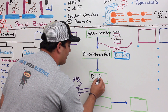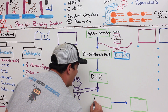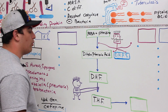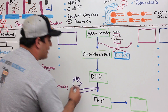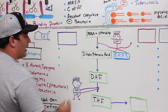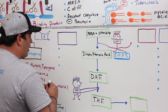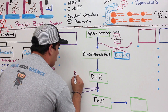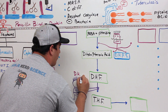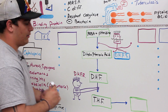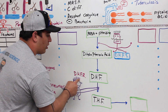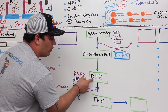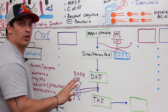Then that dihydrofolic acid is converted into tetrahydrofolate, or tetrahydrofolic acid. That reaction is catalyzed by this enzyme, which is called dihydrofolate reductase. So dihydrofolate reductase catalyzes the conversion of dihydrofolic acid into tetrahydrofolic acid.